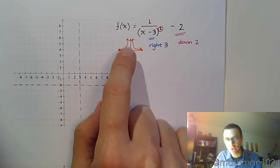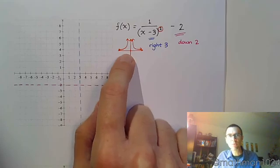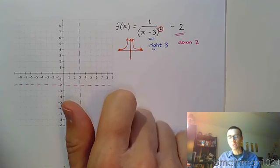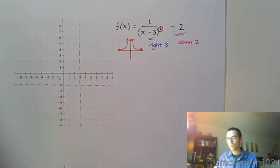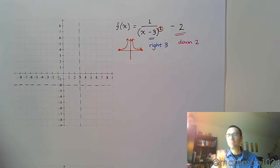If we're going to plot this shape, let's remember the key points and plot those accordingly. If this were a multiple choice question on your homework, you would know: volcano shape, shifted to the right three, and down two — and it would be easy to pick that off. But if we have to graph by hand, it's a little bit more difficult.